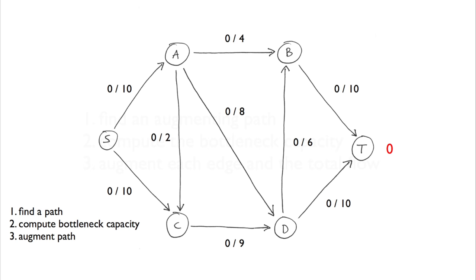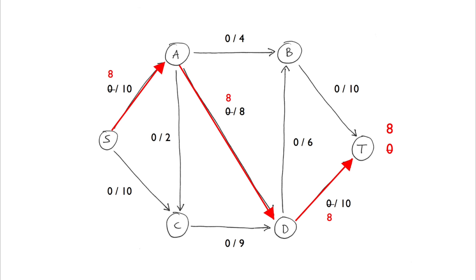Let's start at S and look for a path to T, remembering the edges in our path must be non-full and forward, or non-empty and backward. Let's choose the following path first. The bottleneck capacity is A to D, a value of 8. We'll augment all edges with this value. Also note that each node must remain in equilibrium, that is, the flow into the node must equal the flow out of the node. We're done augmenting, so let's look for our next path.